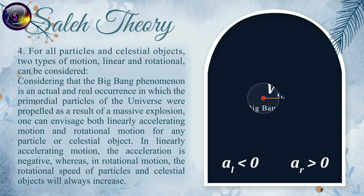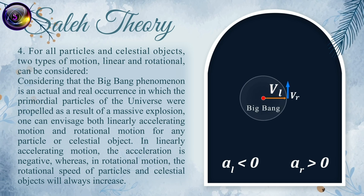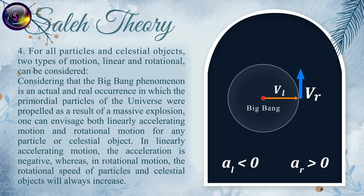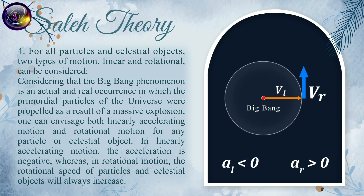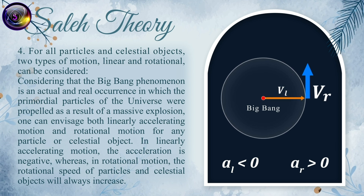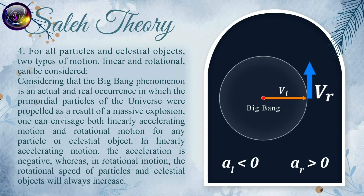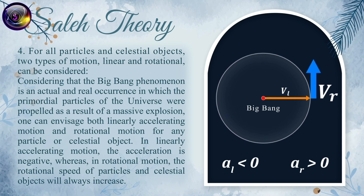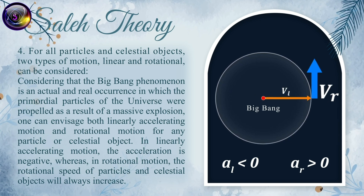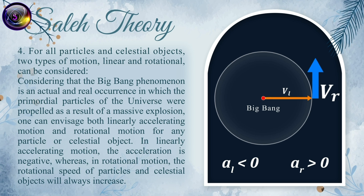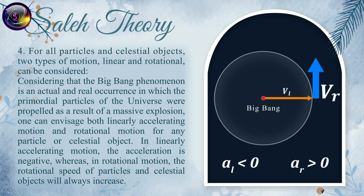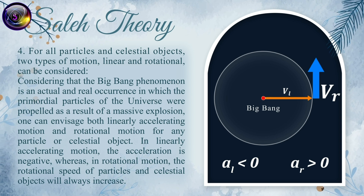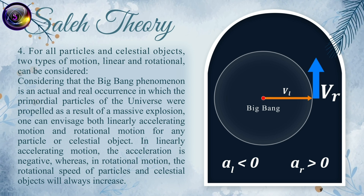Principle 4: For all particles and celestial objects, two types of motion — linear and rotational — can be considered. Given that the Big Bang is an actual and real occurrence in which the primordial particles of the universe were propelled as a result of a massive explosion, one can envisage both linearly accelerating motion and rotational motion for any particle or celestial object. In linearly accelerating motion the acceleration is negative, whereas in rotational motion the rotational speed of particles and celestial objects will always increase.